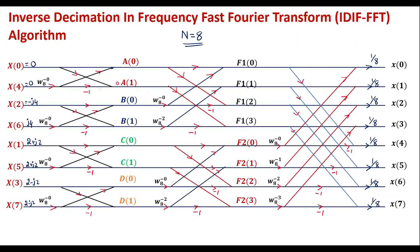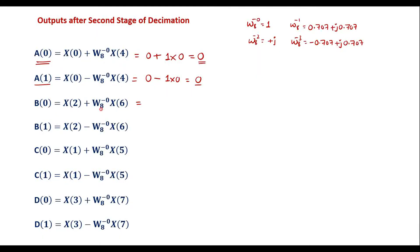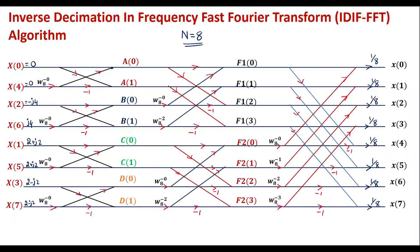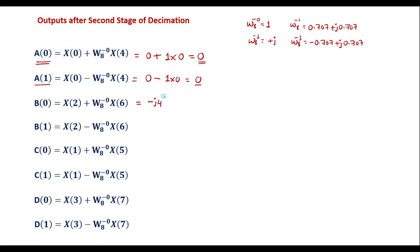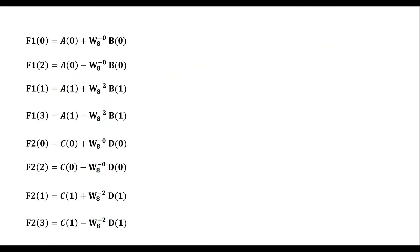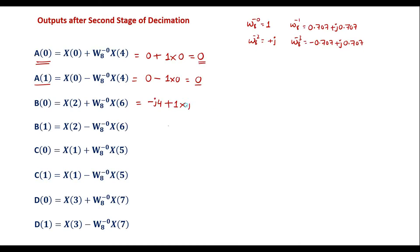Now b(0) = X(2) + W8^0·X(6) = -j4 + 1·(+j4) = -j4+j4 = 0. And b(1) = X(2) - W8^0·X(6) = -j4 - j4 = -j8. So b(0)=0 and b(1)=-j8. For the c group: c(0) = X(1) + W8^0·X(5) = (2+j2) + 1·(2+j2) = 4+j4. And c(1) = X(1) - X(5) = (2+j2)-(2+j2) = 0.